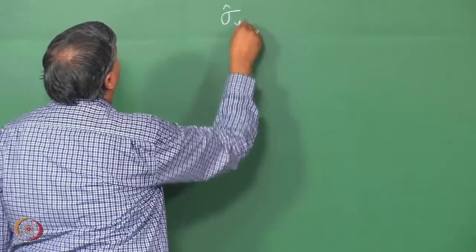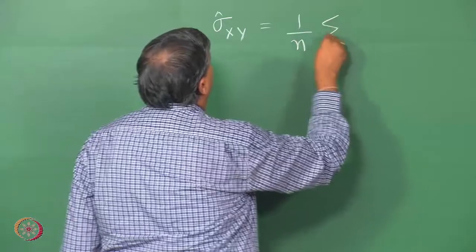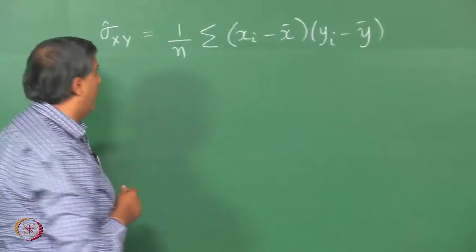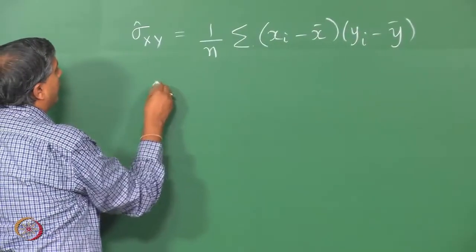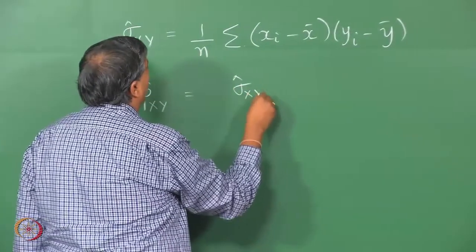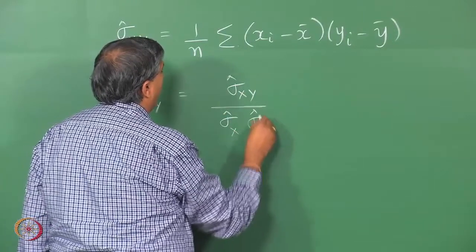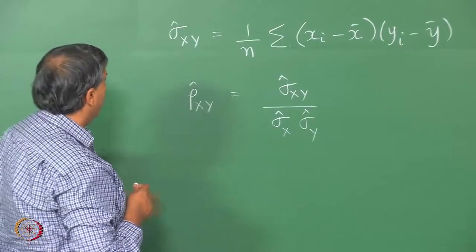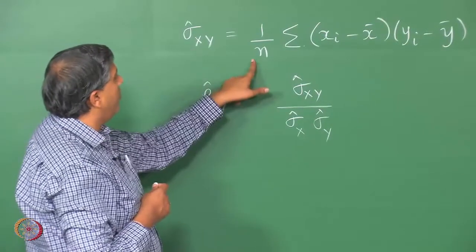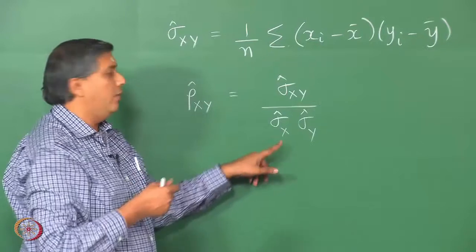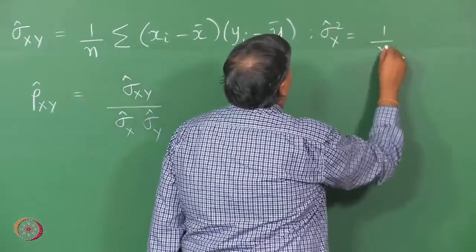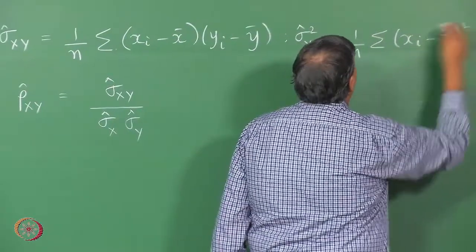Let me explain that briefly. What we mean is that we use an estimator for covariance with this expression, where x-bar and y-bar are the usual sample means. From the expression given on the slide, an estimate of correlation is constructed. Whether you use 1/n, 1/(n−2), or 1/(n−1), it does not influence the correlation estimate so long as you use the same expression for estimating the standard deviations or variances of x and y.